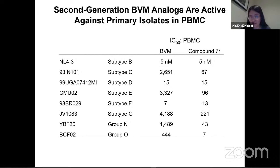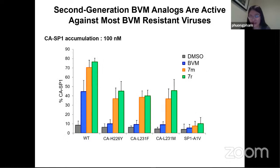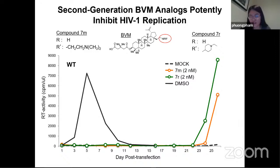We did another screening assay against different Bevirimat-resistant viruses that arose during the capsid SP1 region. Compared to Bevirimat, both our compounds 7M and 7R show a high level of virus inhibition. In cell culture, we also noted that these compounds are able to inhibit virus replication. Compared to wild type where the virus would peak around day 5, with compound-treated cells the virus would peak around day 25 or 26 — almost a three-week difference.